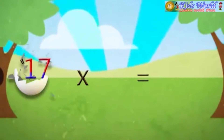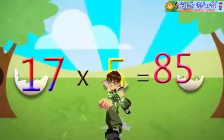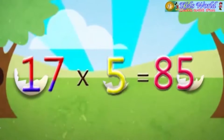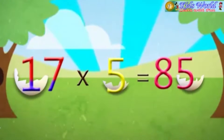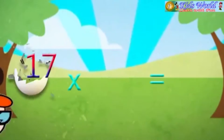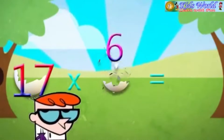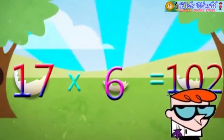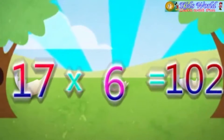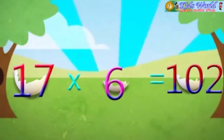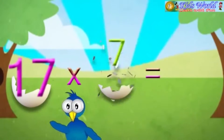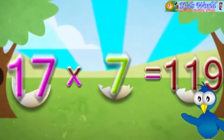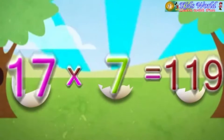17 into 5 is equal to 85. 17 into 6 is equal to 102. 17 into 7 is equal to 119.